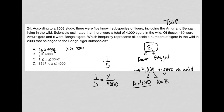Choice B says X over 5 is greater than or equal to 4,000, which I can simplify by multiplying both sides by 5, giving X is greater than or equal to 20,000. That is impossible — there are only 4,000 tigers in the wild. We can't have a subspecies totaling more than the total number of tigers, so there can't be 20,000 Bengal tigers. Choice B is eliminated.